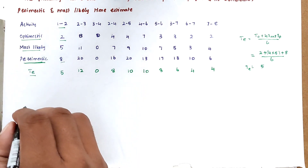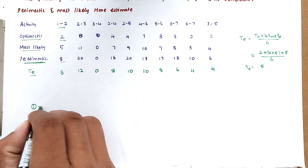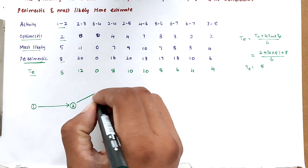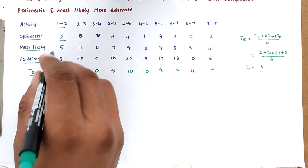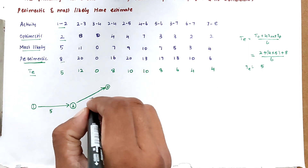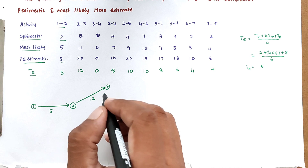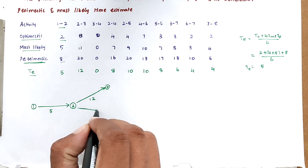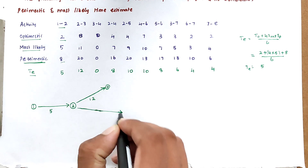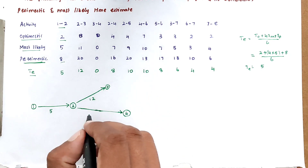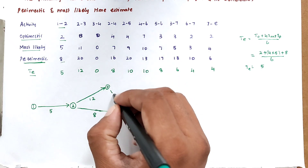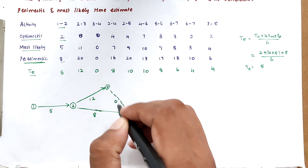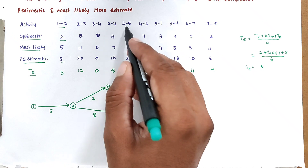Now we draw the network diagram. First, activity 1 to 2 is drawn with duration 5 days. Next, activity 2 to 3 is drawn with duration 12 days. Then activity 3-4 is a dummy activity drawn as a dotted line with duration 0. Activity 2-4 is drawn with duration 8.